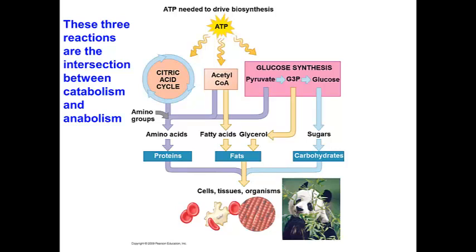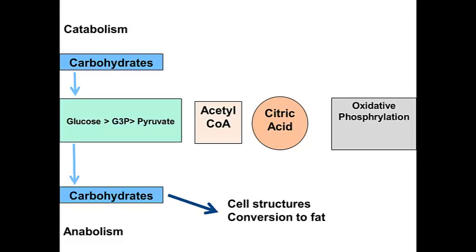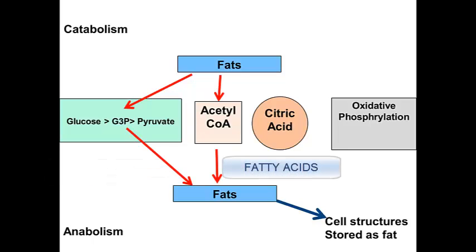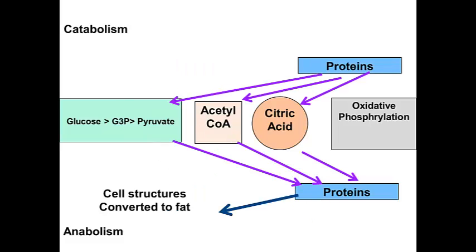Excess glucose is used to form carbohydrates, which are either stored as glycogen, converted to other carbohydrates the cell uses, or converted and stored as fat. For fats, glycerol can be formed from the glycolysis intermediate G3P, and fatty acids can be formed two carbons at a time using excess acetyl-CoA; fats are used as cell structures or stored in adipose tissue. Proteins are formed through excess amino acids, can be used to form cell structures, and even proteins can be converted to fat. Amino acids arise from intermediates of the citric acid cycle, glycolysis, and the formation of acetyl-CoA.